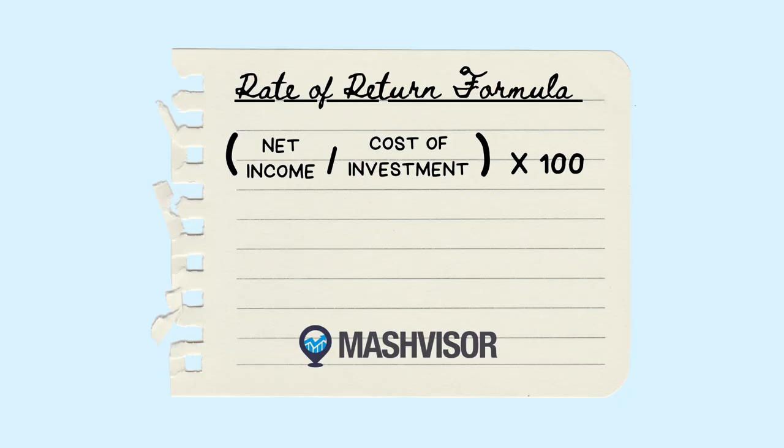There are several types of return on investment calculations. The most common, and the one we'll be discussing today, is the income approach. The formula is net income divided by cost of investment, times 100 to make it a percentage, and it equals a reliable return percentage.